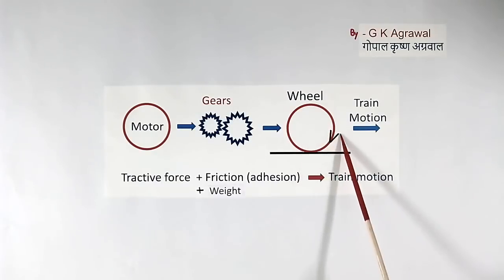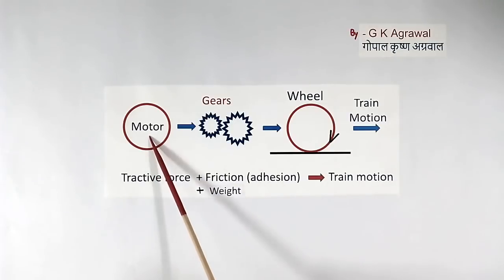Now this tractive force and adhesion together. Tractive force is this, and adhesion is in between wheel and rail. This and this together make the train move. Here, more the utilization of this friction between wheel and rail, train motion will be better. In the case of AC motor along with IGBT-based control system, utilization of this friction is much better.